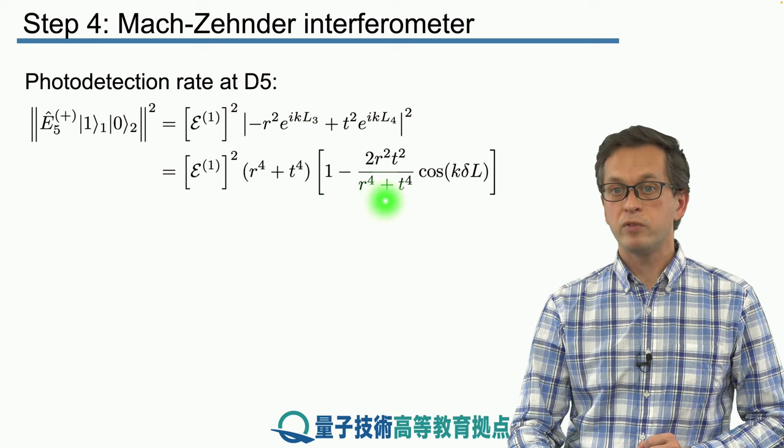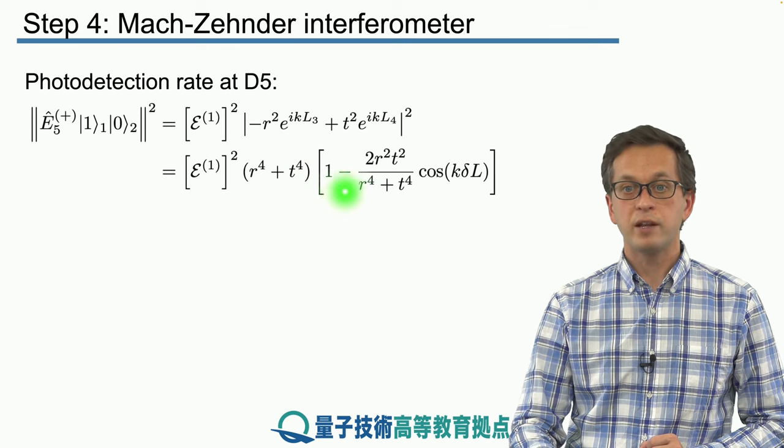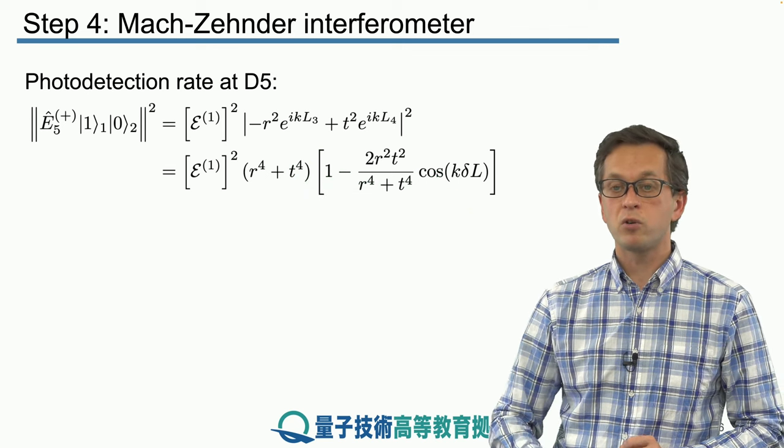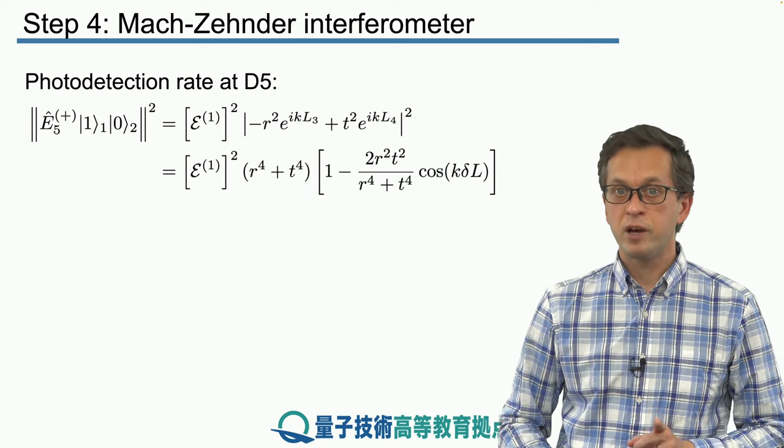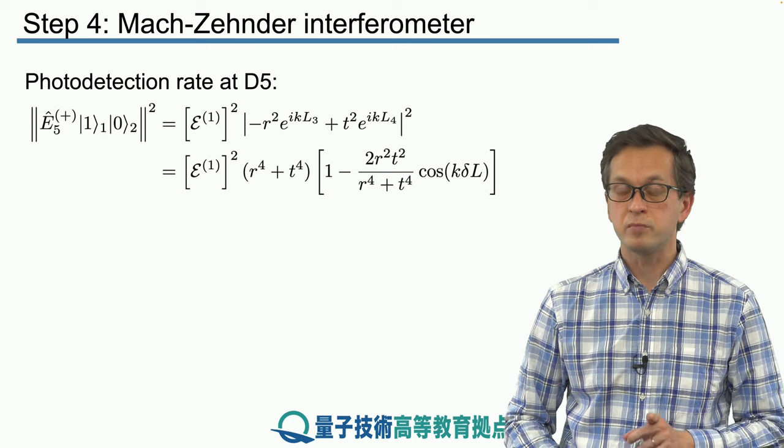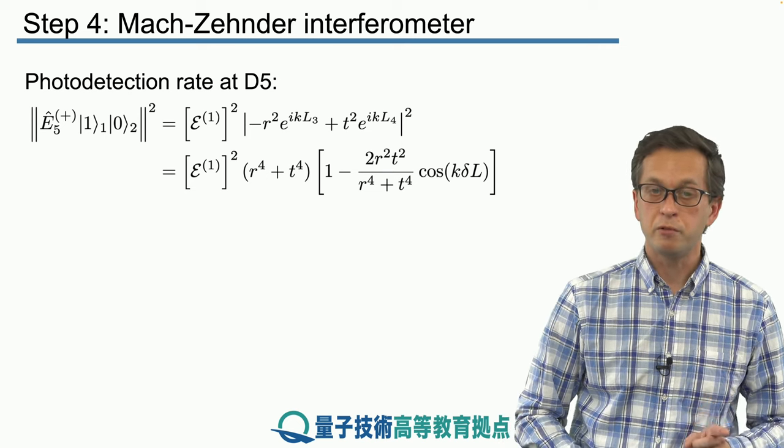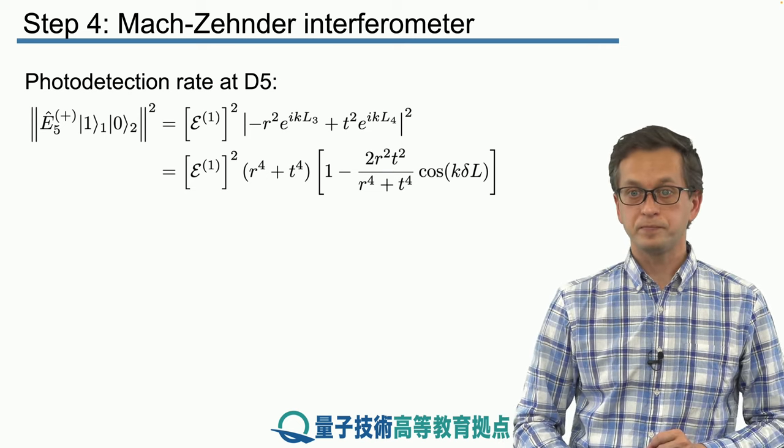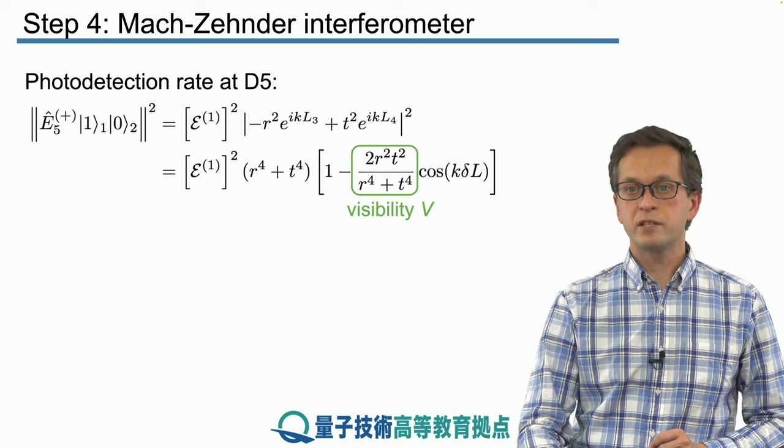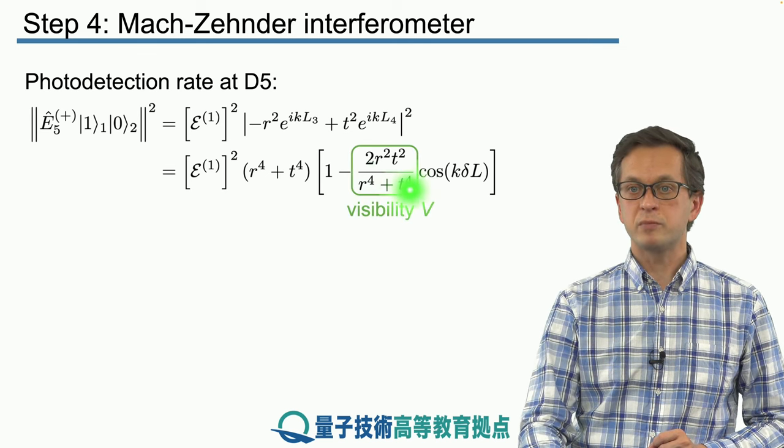What we get is this R^4 plus T^4 in front of the whole expression, and then we've got some constant, 1 minus some constant, multiplying cos(k δL). I remind you δL is the path difference between the paths taken by mode 3 and mode 4.